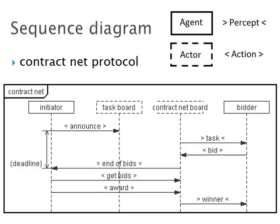This slide depicts the sequence diagram for the contract-net protocol. The protocol starts when an initiator agent performs an announce action on a task board artifact. The contract-net board then produces a task percept for bidders who will bid for it. The contract-net board controls the deadline and sends the end-of-bid percept to the initiator, who will collect bids and award the best offer. The deadline is reached when all able agents have bid or a timeout is reached. The bidder then receives a winner percept indicating who won the task. A limitation found here is that it is not possible to connect two actors in the sequence diagram — for example, to define that an actor creates another actor, such as task boards instantiating contract-net boards.